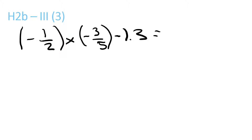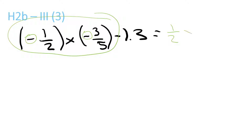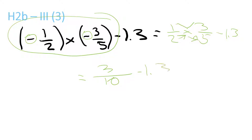Now you're going to open up these brackets. A minus and a minus is a plus, so you don't need to write a minus. So 1 over 2 times 3 over 5 minus 1.3, and then equals 1 times 3 equals 3, over 2 times 5 equals 10, so 3 over 10 minus 1.3.